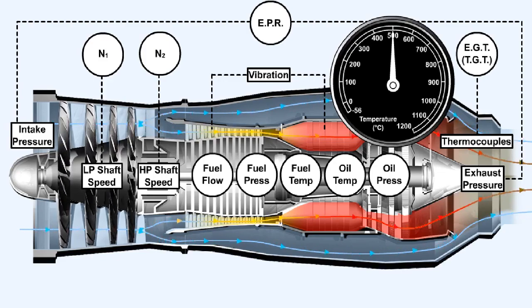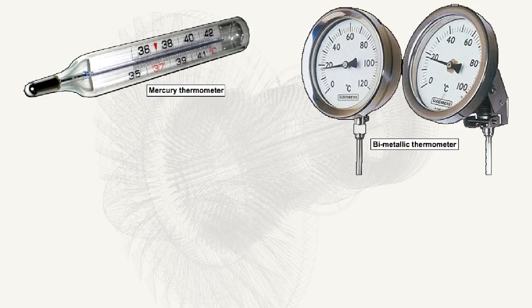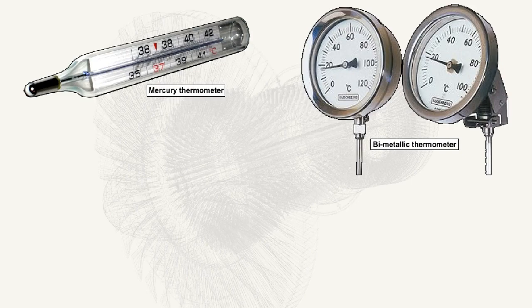There are four major types of temperature measuring device. The expansion type relies on the principle that most solids, liquids and gases expand and contract with temperature changes. Two examples of the expansion type of device are the mercury thermometer and the bimetallic strip.